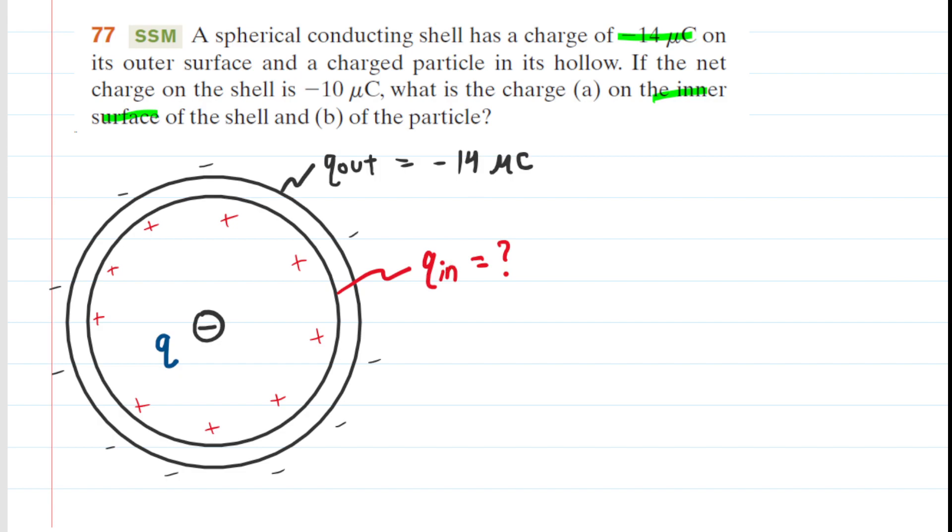Now that won't be too bad, because the question tells us, very importantly here, that the net charge on the entire shell is negative 10 microcoulombs. So for the net charge, we could say Q net, and that would represent the entire charge on both the inner and outer surface of the shell. So that's going to equal the Q out plus the Q in. So that's simply a statement that the net charge on the sphere has to equal the total charge on the outer and inner surfaces. And so we know the net charge. They told us that that was negative 10 microcoulombs, so we could fill that in.